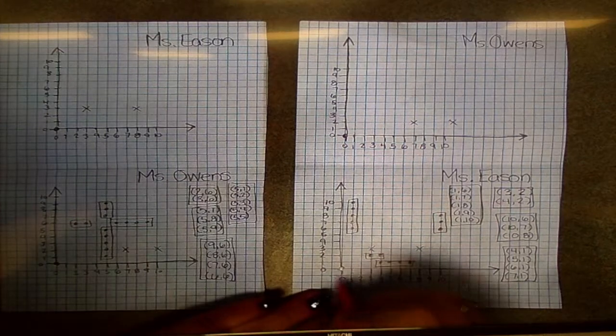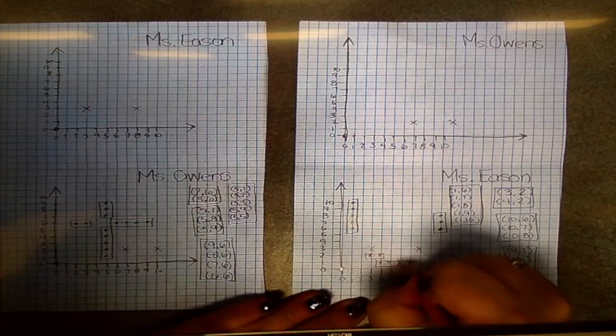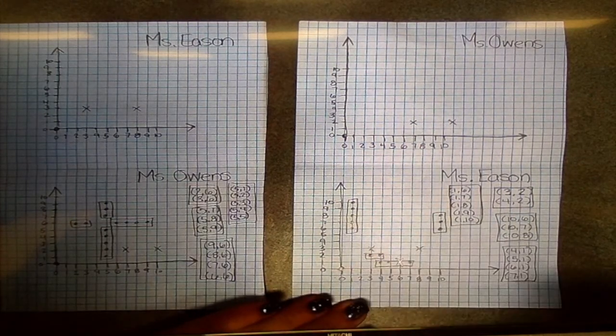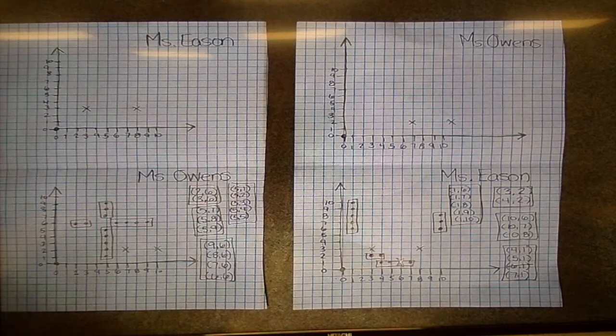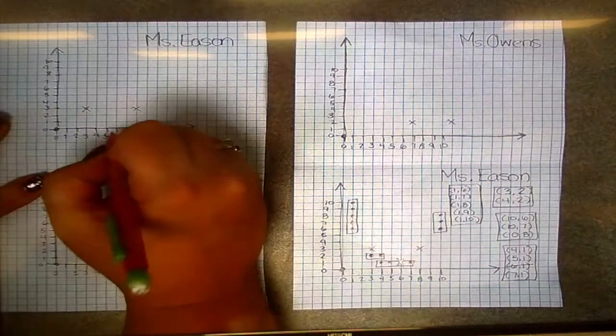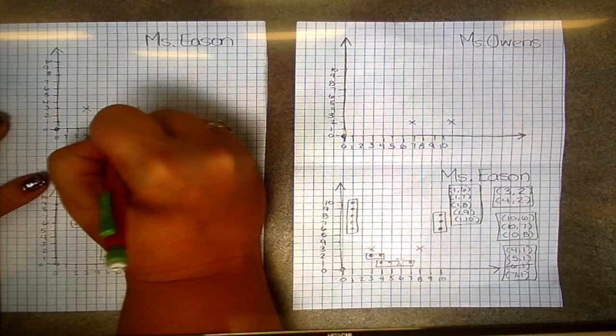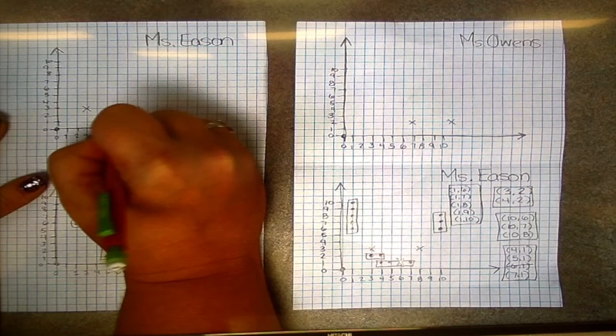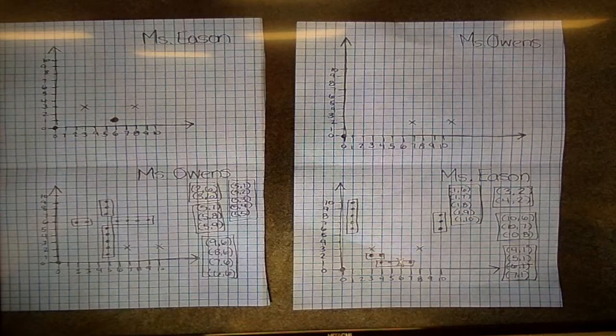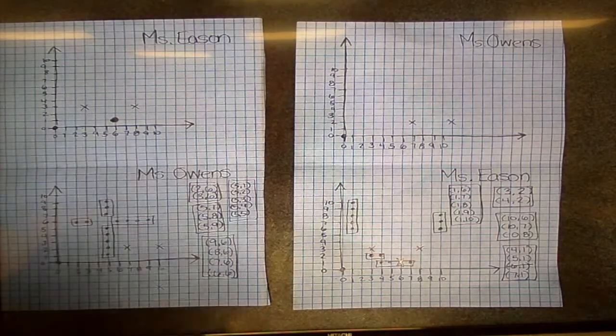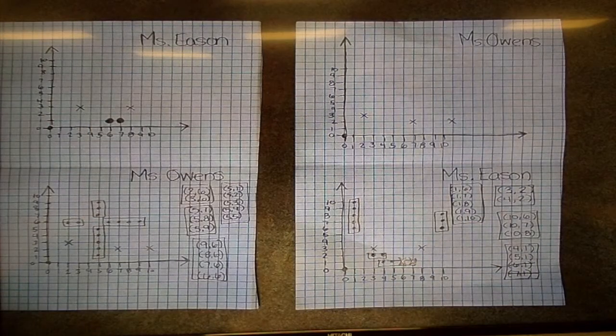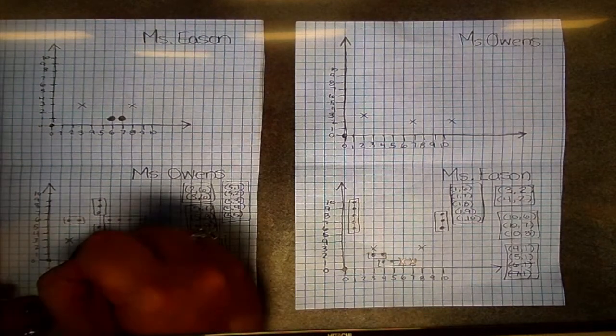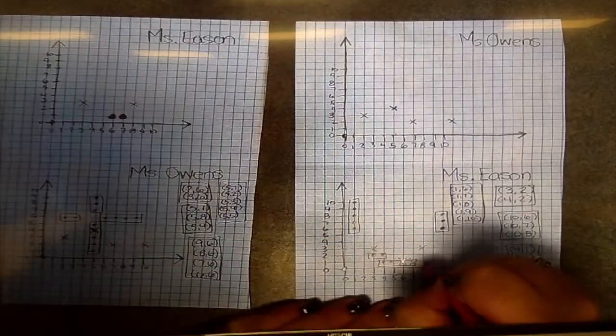You can see in this next section, when Miss Owens calls out an ordered pair that hits my boat, I put an X over top that section of my boat, and I cross it out on the side. She will then mark it on her paper as a point instead of an X. That way she knows where my boat is. Once your partner has guessed all the ordered pairs to go with one of your boats, you will let them know that they have sunk your ship.